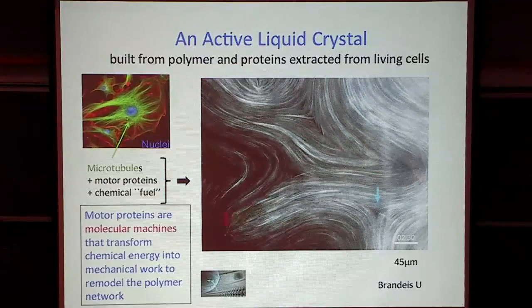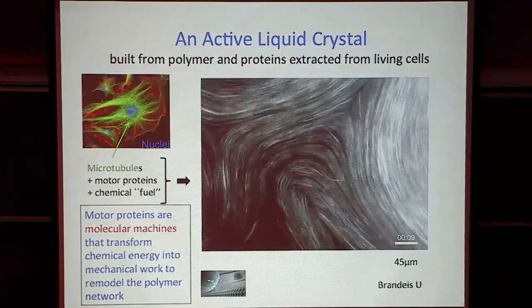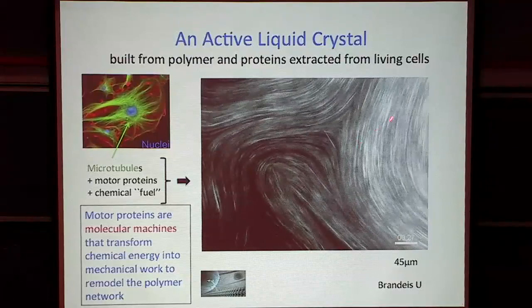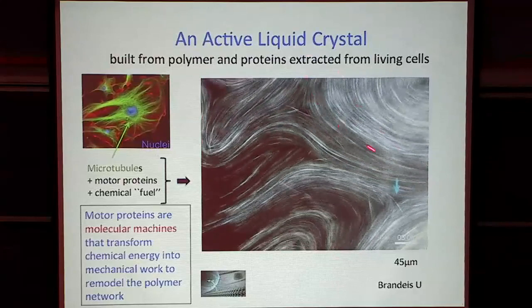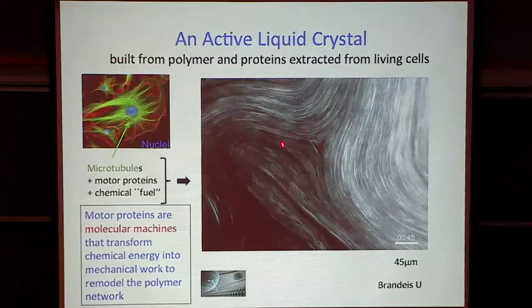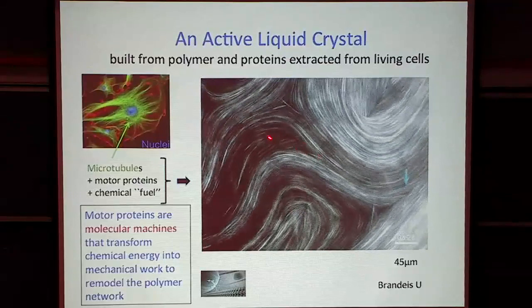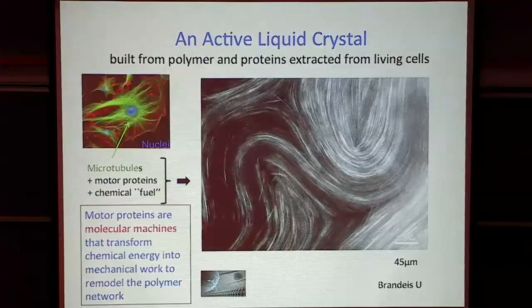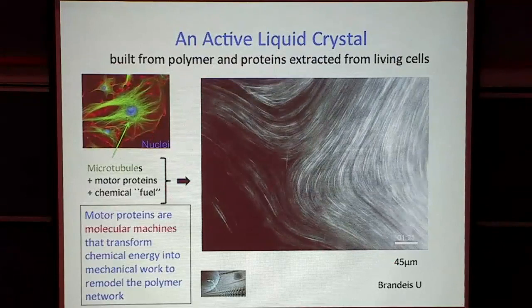These continuous motions resemble the cytoplasmic streaming that goes on inside cells, especially plant cells. There is nematic order, and defects — places where orientation is bent a lot with very precise topology. There are two types of defects: one that looks like a comet and one that looks like a triangle, and nothing else really. They keep moving around and almost seem to drive this motion. [Question: Is this computational?] No, this is an experiment — observed using dark field optical microscopy.